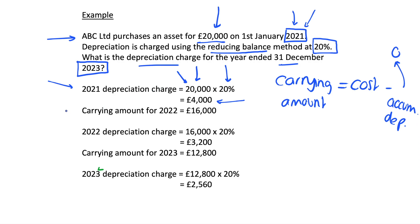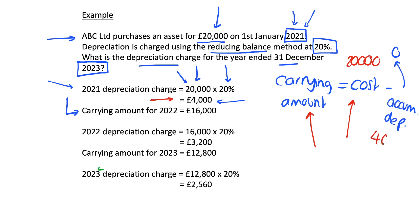Carrying forward to 2022: the carrying amount is the original cost of £20,000 minus the accumulated depreciation of £4,000 from 2021, giving a carrying amount of £16,000. The depreciation charge for 2022 is therefore £16,000 × 20% = £3,200.